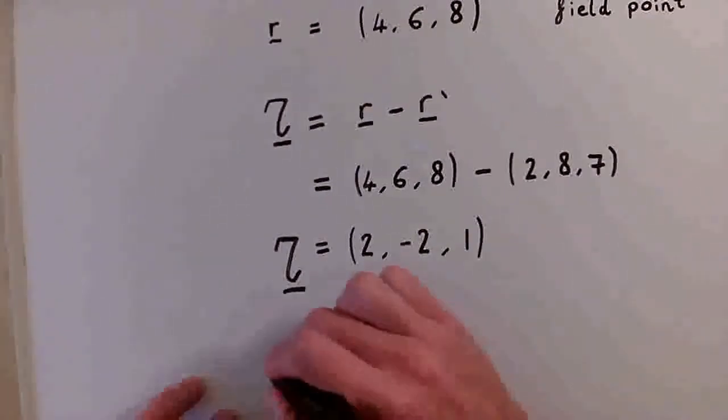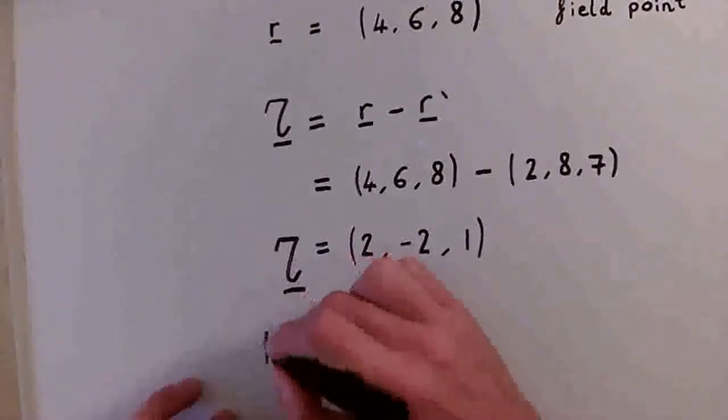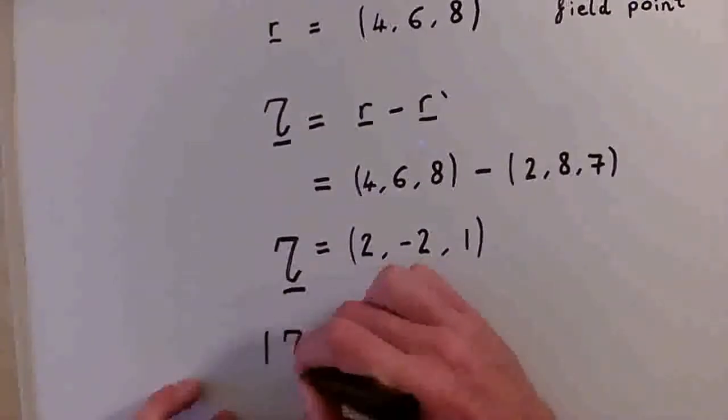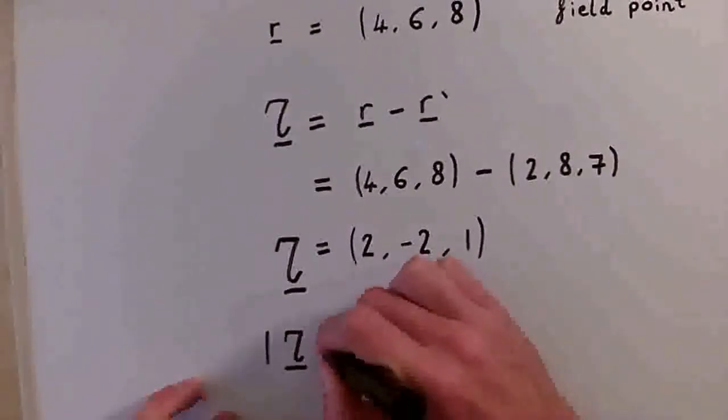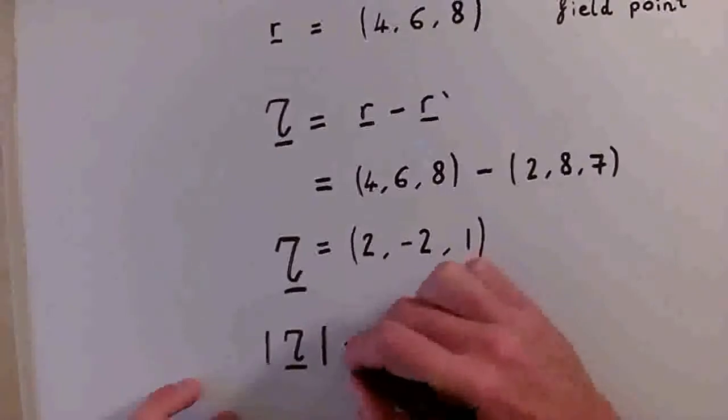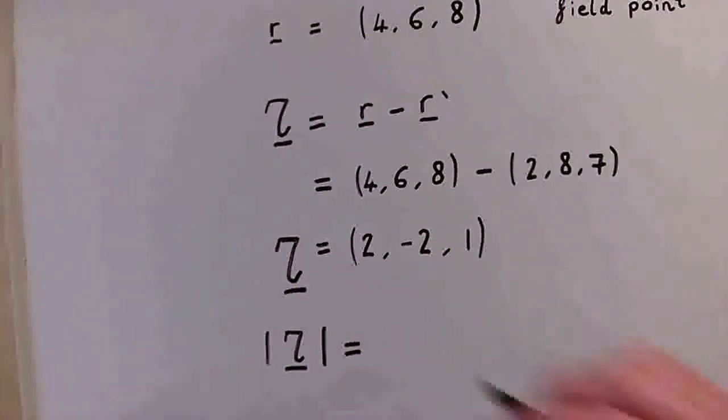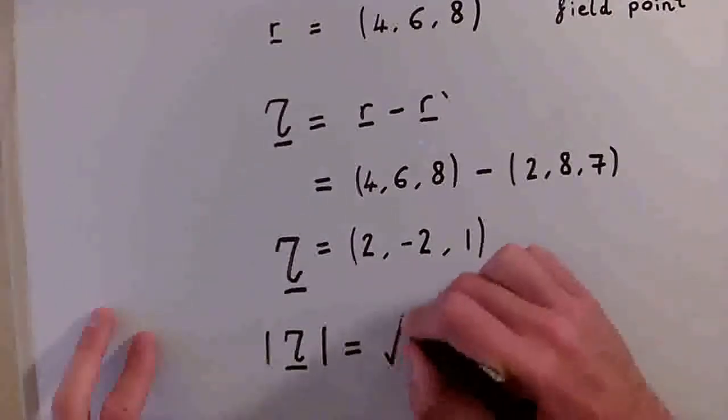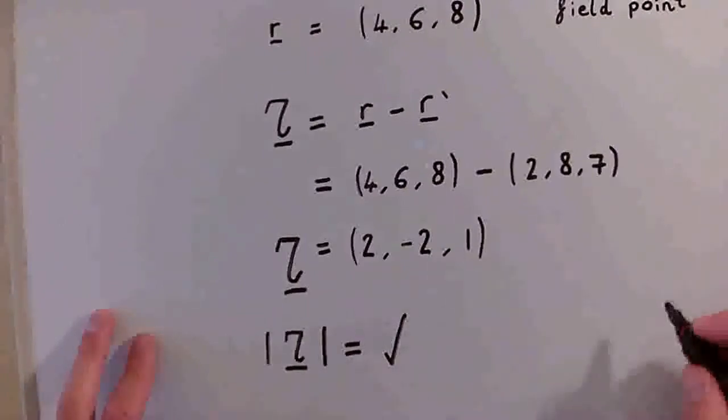So the next part of the question wants us to work out the magnitude of the separation vector. So I'll denote it like this. And we work this out as the square root of the sum of the squares of the components.